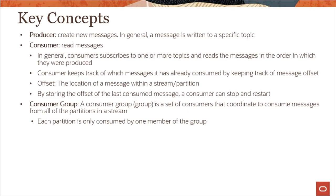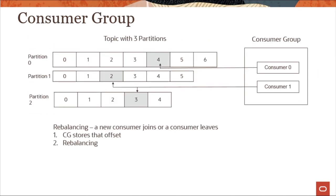A consumer group is a set of consumers that coordinate to consume messages from all of the partitions in a stream, where each partition is only consumed by one member of the group. In a graphical representation, a consumer group with two consumers might have consumer zero consuming from partition zero, and consumer one consuming from partition one and partition two, both tracking their position using the offset value. Any rebalancing — such as a consumer leaving or joining a group — is handled automatically.